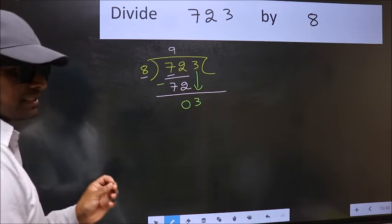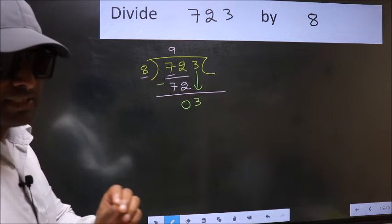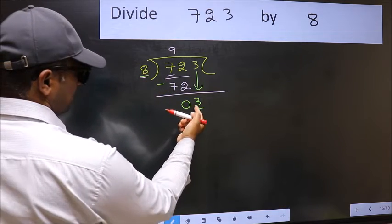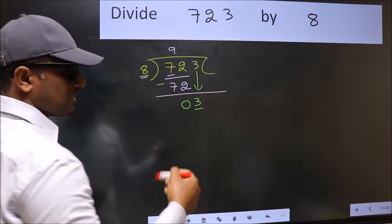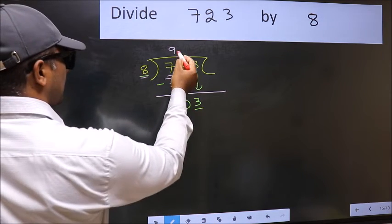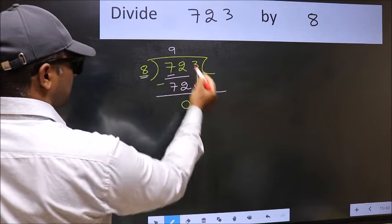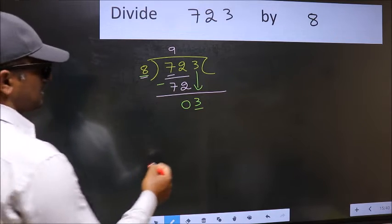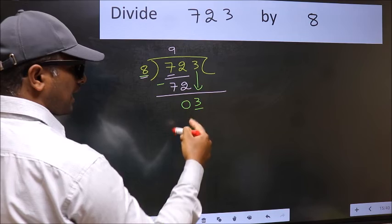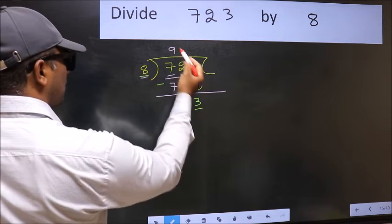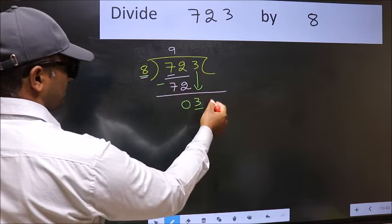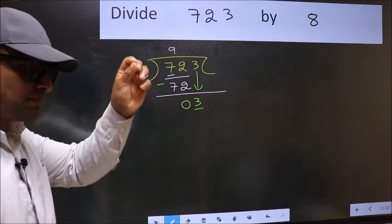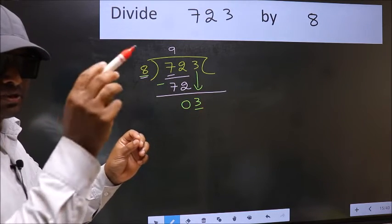After this step, the mistake happens. And the mistake is this: here we have 3 and here 8. 3 is smaller than 8. So, what many do is they directly put a dot and take 0, which is wrong. Why is it wrong? Because just now you brought this number down, and in the same step you want to put dot and take 0, which is wrong. Bringing the number down and also putting dot and taking 0 is wrong.